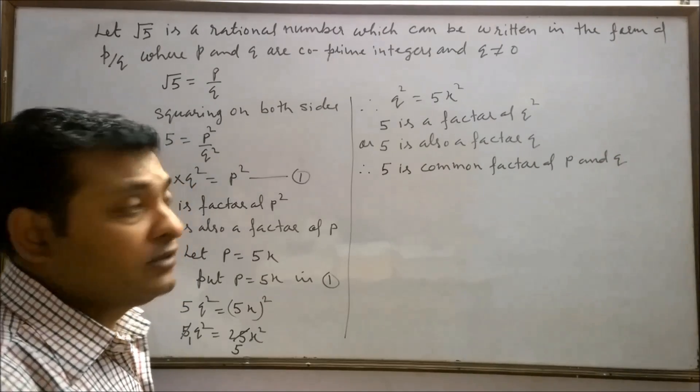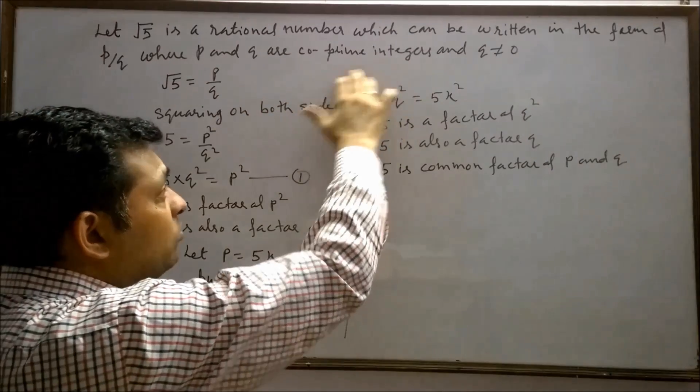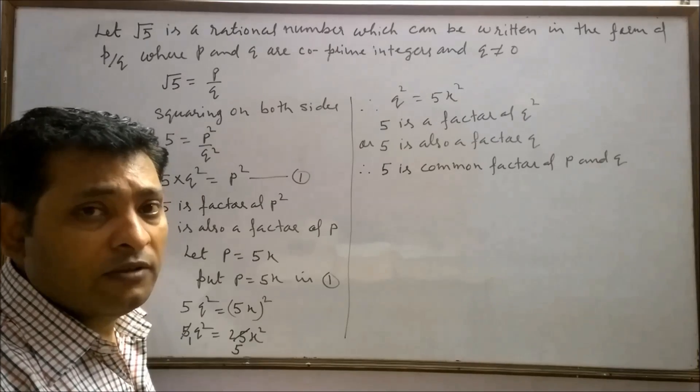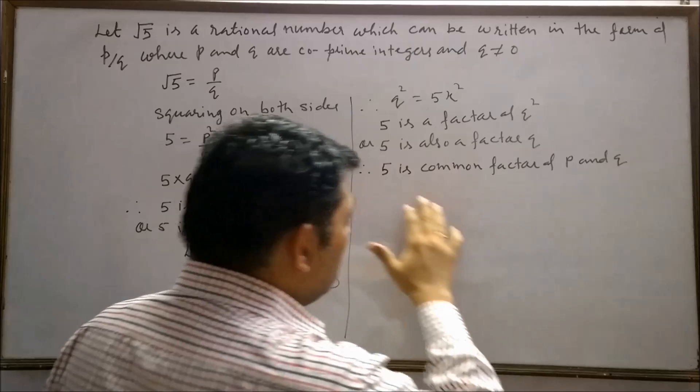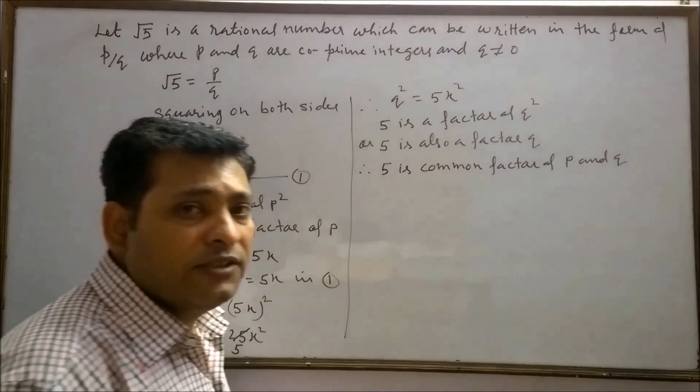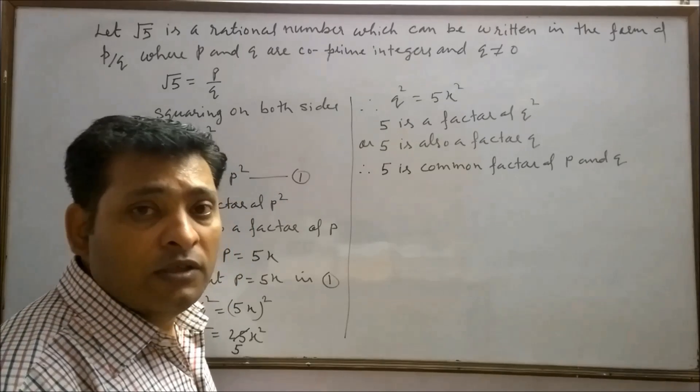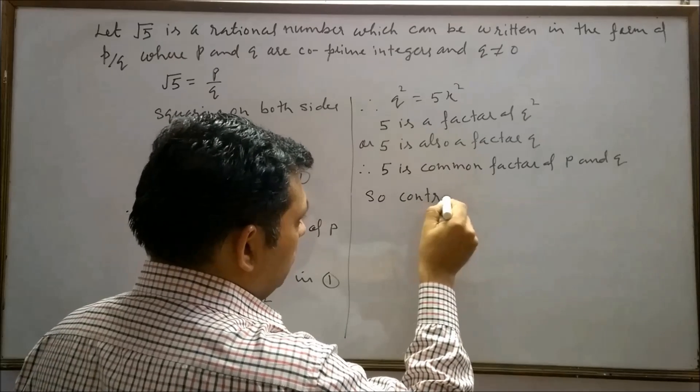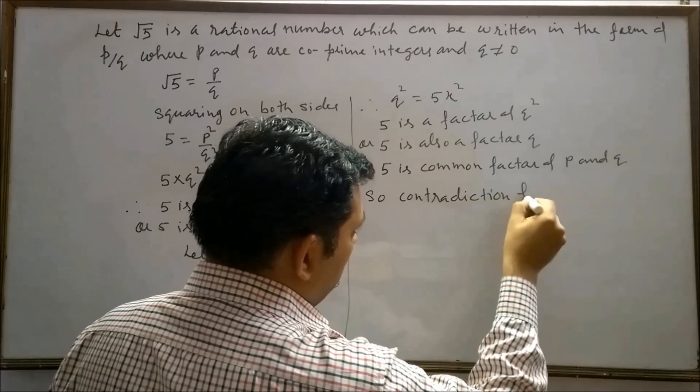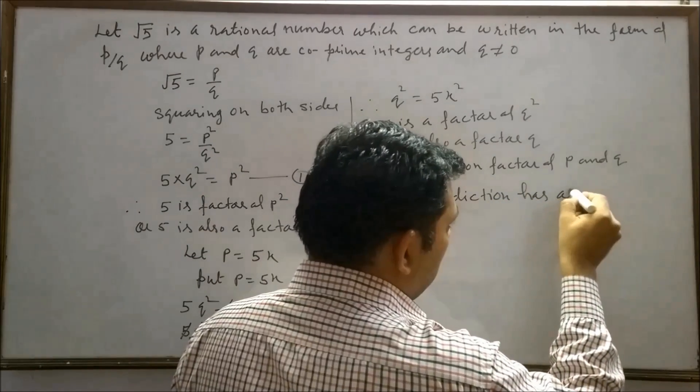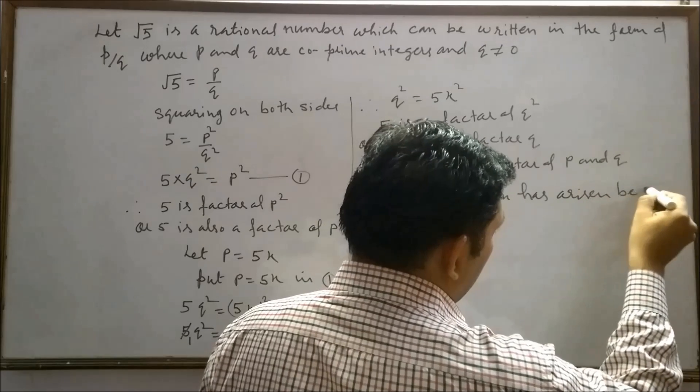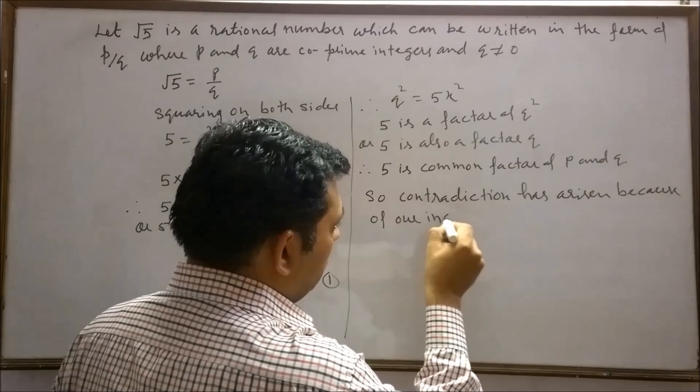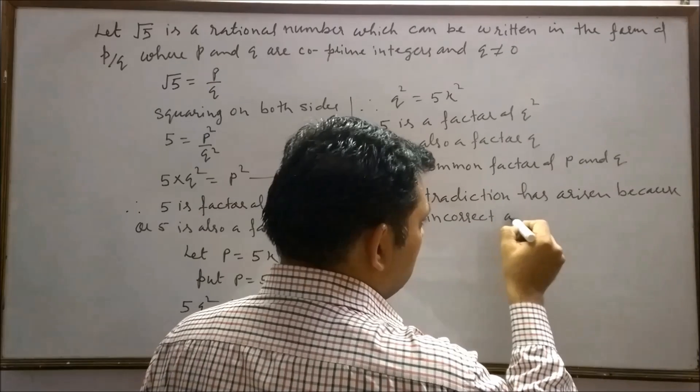So contradiction has arisen since we have taken p and q as co-prime integers, and co-prime integers are those integers which have no common factor other than 1. But here we found that 5 is a common factor of p and q. So contradiction has arisen because of our incorrect assumption.